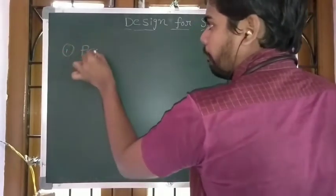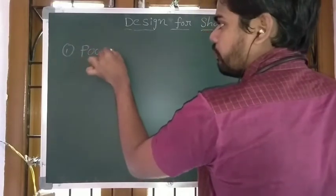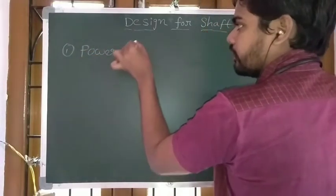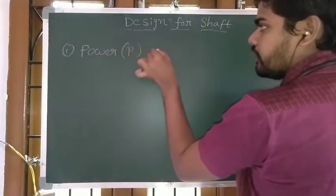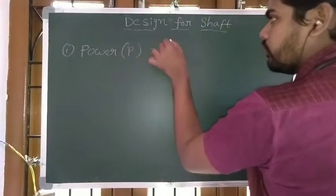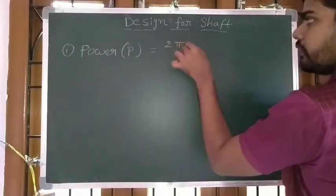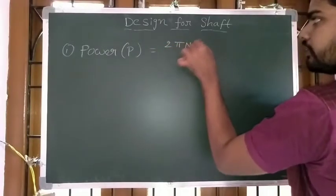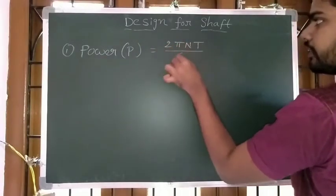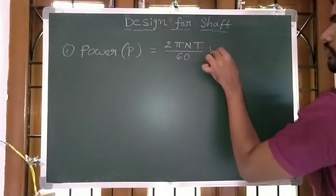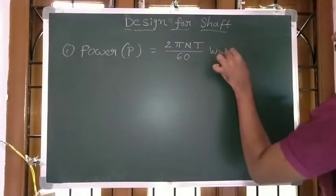First formula: power transmitted by shaft. P is equal to 2πNT divided by 60, in watts.